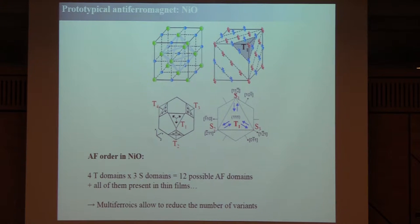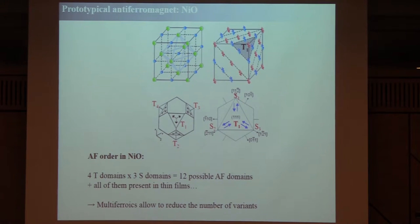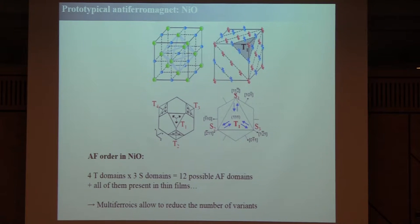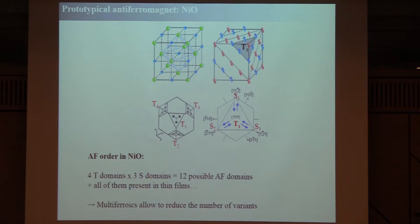A few words about nickel oxide — the prototypical insulating antiferromagnet. When talking about antiferromagnetism, you have two things to consider for domains. First is the staggered direction: in nickel oxide it's along the [1,1,1] direction, giving four possible staggered-direction domains, called T domains. Within each T domain there are three possibilities for the spin orientation, called S domains. So in pure nickel oxide you have 12 possible antiferromagnetic domains. When you grow a thin film, you get more or less all of them — it's a real mess.